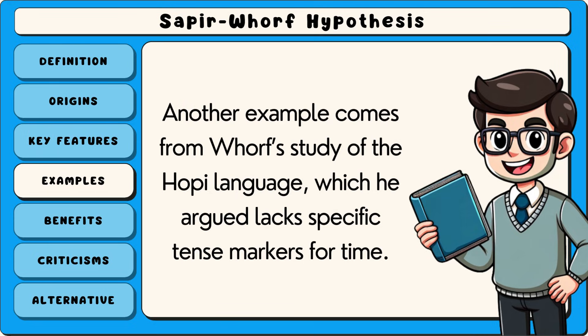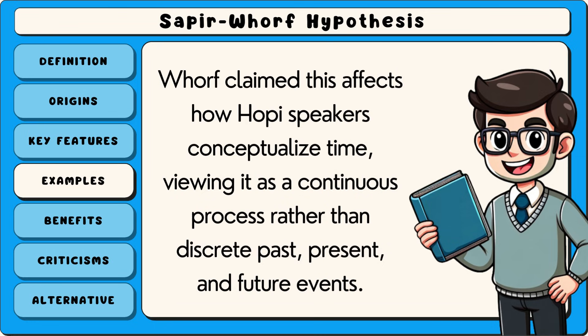Another example comes from Whorf's study of the Hopi language, which he argued lacks specific tense markers for time. Whorf claimed this affects how Hopi speakers conceptualise time, viewing it as a continuous process rather than discrete past, present and future events.